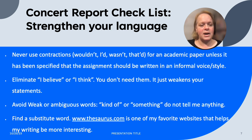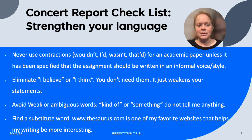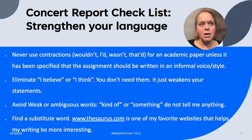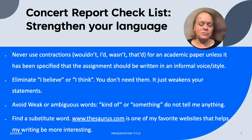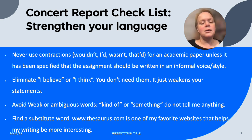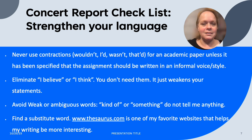Strengthen your language. Never use contractions like 'wouldn't,' 'I'd,' or 'wasn't' in an academic paper unless specified otherwise. Eliminate phrases like 'I believe' or 'I think' — they weaken your statements. Avoid vague words like 'kind of' or 'something.' Find a stronger or more interesting substitute word. The website thesaurus.com is a great resource. If you use the word 'great' six times, you could find six different words to make your writing much more interesting.